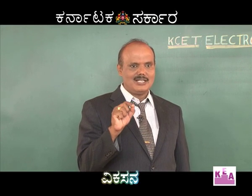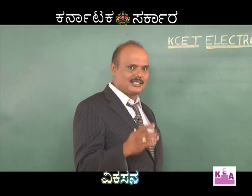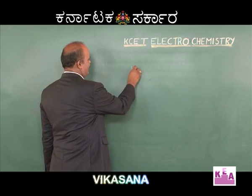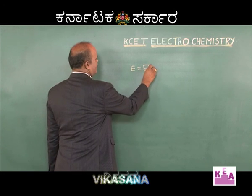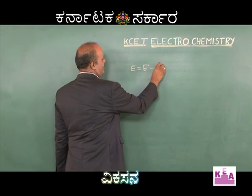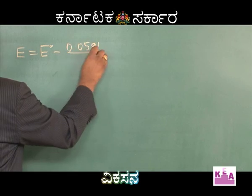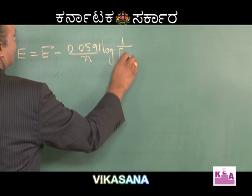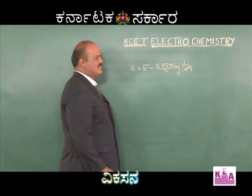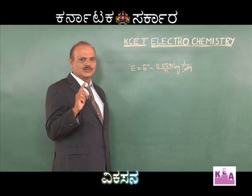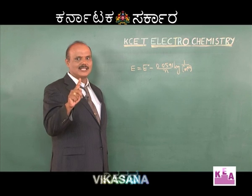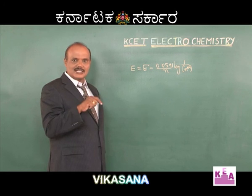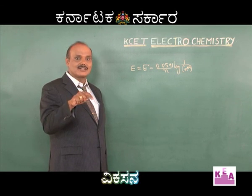The Nernst equation — what is it? We are going to write the Nernst equation in three different ways. The first form: E = E° − (0.0591 / N) × log(1 / [metal ion concentration]). This is the Nernst equation used to calculate the single electrode potential at different concentrations.